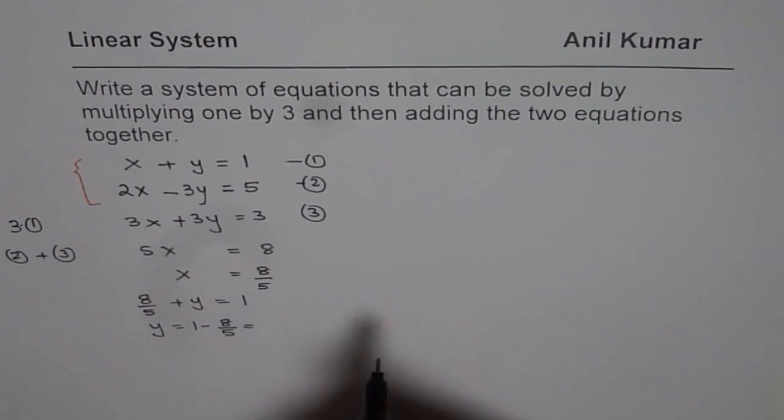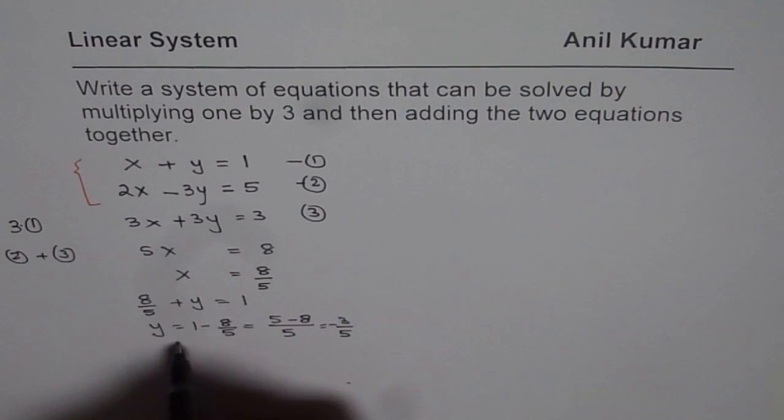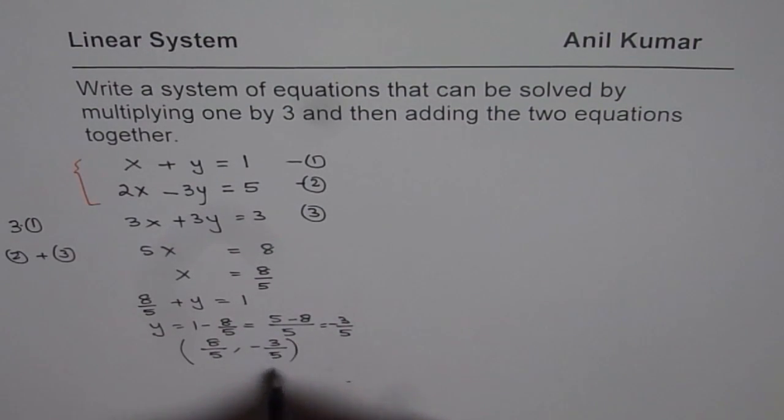So y equals 1 minus 8 over 5. That is to say, multiply this by 5, you get 5 minus 8 over 5 or minus 3 over 5. The answer is kind of complicated, but you understand the method. That is very important. The coordinate point (8/5, -3/5) is the solution.